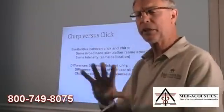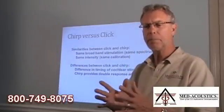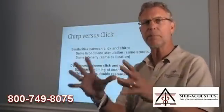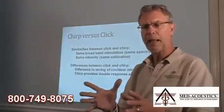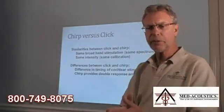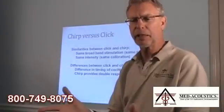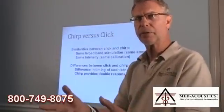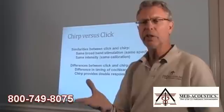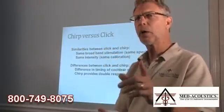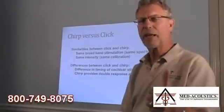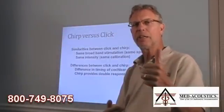What's the difference between the chirp and the click? The similarities are that they are both broadband stimulations with the same spectrum of frequencies, the same intensity, and the same calibration. The difference is in the timing of the cochlear stimulation — it's a more efficient timed stimulation, and it produces double the response. When we can produce a higher amplitude response, we can get it faster because we have to do much less averaging.